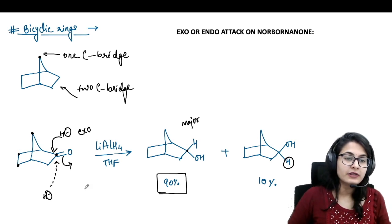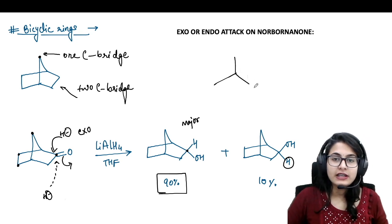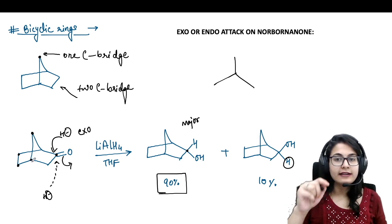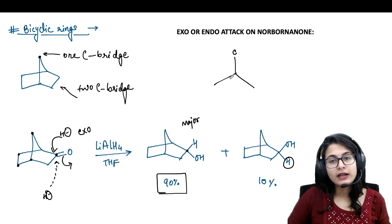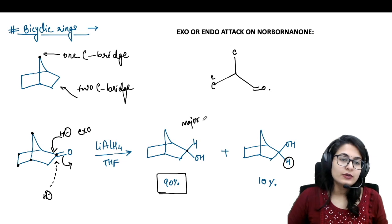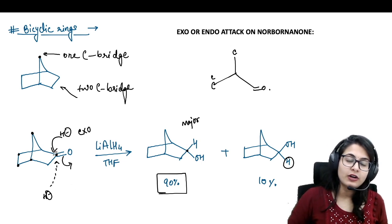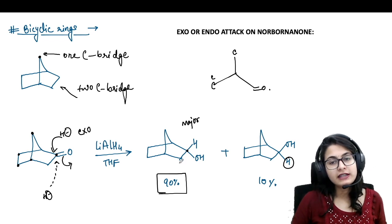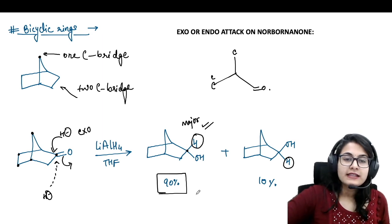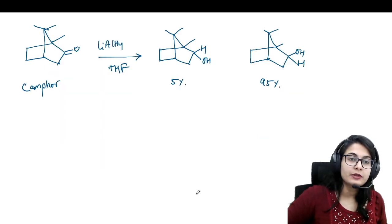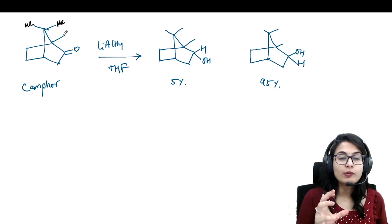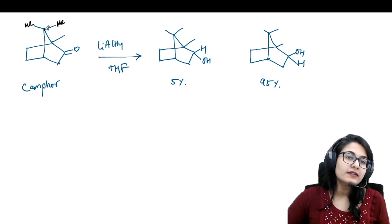If you are doing the same attack from the bottom, you face steric hindrance from two different carbons. If you look at this molecule through the carbon, you see there is one carbon above and two carbons below. The steric hindrance is minimum from the top and more from the bottom, so this is your major product where the hydride attacks from above. Similarly, we now have camphor.